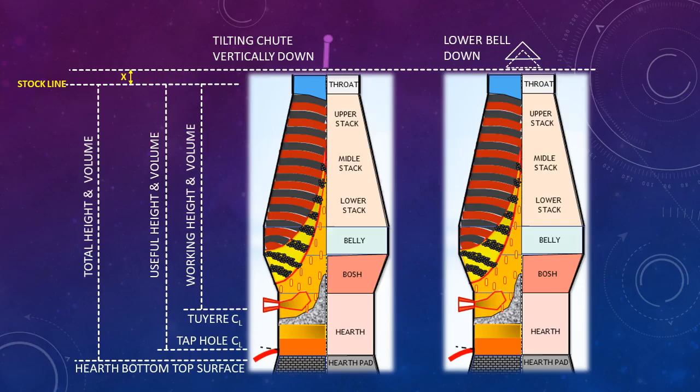Similarly, in the BLT charging system, when the tilting shoot is kept in a vertically down condition, the stock line is considered an additional x value downward, as shown in the figure. The value of x depends upon the size of the furnace. The purpose of this is that during charging, burden material never reaches the bell or shoot height and creates problems in lower bell open/close or shoot movement.